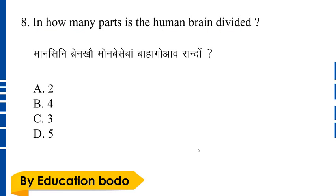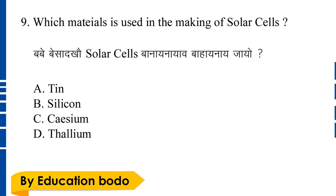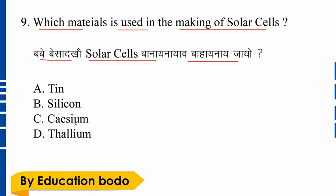Question number nine: Which material is used in the making of a solar cell? Option B is the right answer — Silicon. Silicon is used to make solar cells.